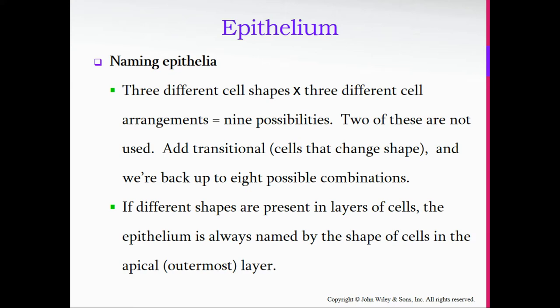If different shapes are present in the layers of the cells, the epithelium is always named by the shape of cells in the apical or outermost layer. For example, when we look at your skin, the very outermost layers of your skin cells are squamous or flat, and there are multiple layers. Going all the way down through the layers of your epidermis from the outside to the basement membrane, they get shorter and fatter, almost taking on a cuboidal shape at the bottom. But since they're flat at the outer surface, that layer is referred to as stratified squamous.